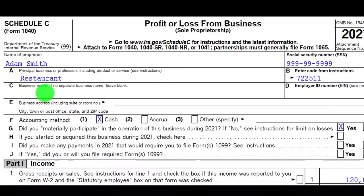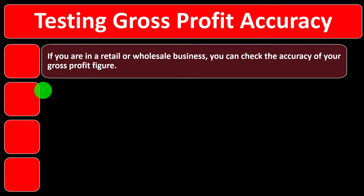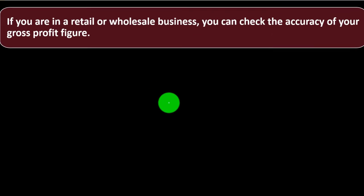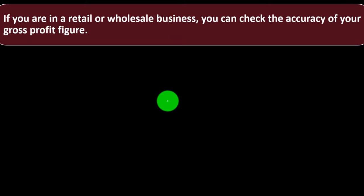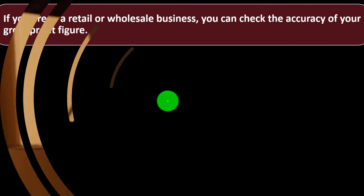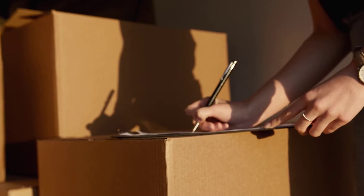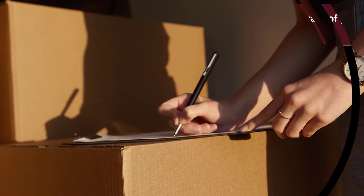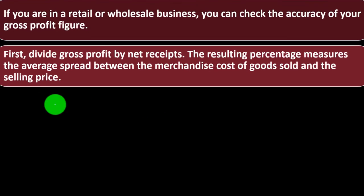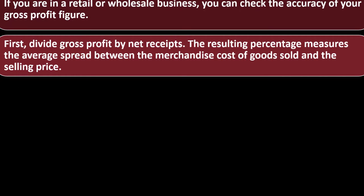Schedule C is basically an income statement, so we're testing gross profit for accuracy. We've got to make sure that gross profit is sufficiently gross and accurate enough to turn in to the IRS. This is a little check figure technique you can use. If you are in a retail or wholesale business — meaning you're purchasing inventory and simply marking it up — then you're going to have an idea of what your markup is.